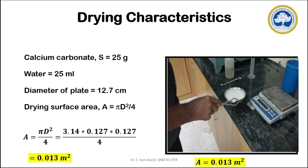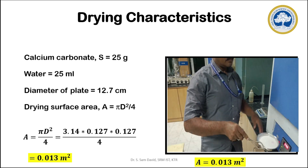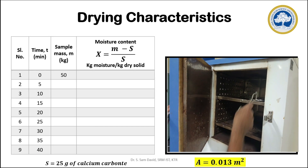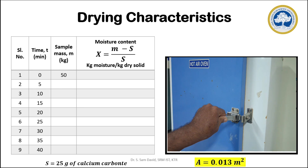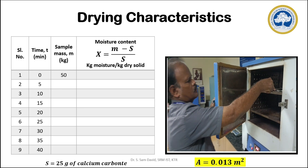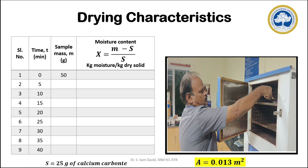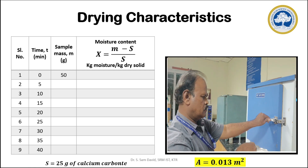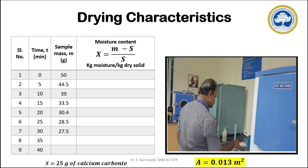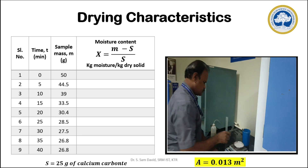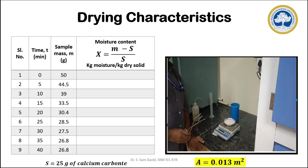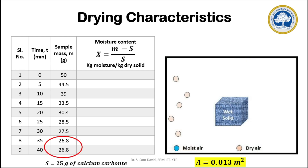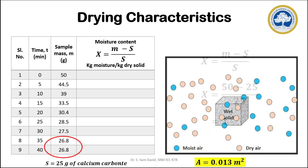Once the wet material is prepared, the drying experiment is carried out by placing the plate in a hot air oven at 200 degrees Celsius. The drying process is monitored by taking the mass of the sample at intervals of 5 minutes. During the experiment, the mass of the wet material decreases. Readings are taken continuously until the mass of the sample no longer changes. In this experiment, the mass measured at the 35th and 40th minutes is the same.